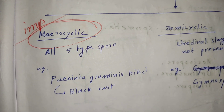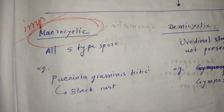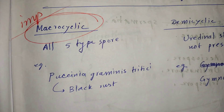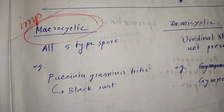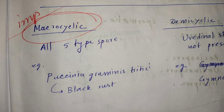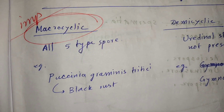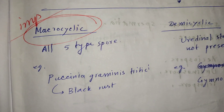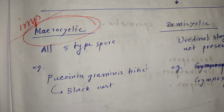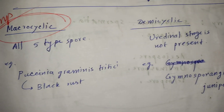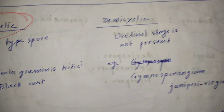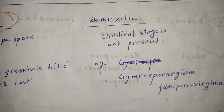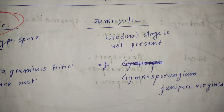The important example of the macrocyclic life cycle is Puccinia graminis tritici, which is the causal organism of black rust of wheat.